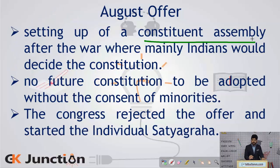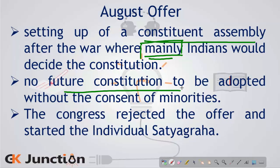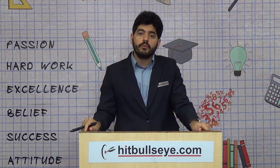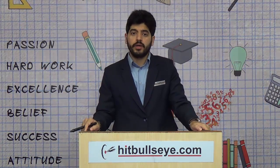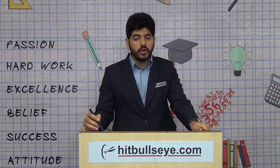The main proposals of the August Offer were: dominion status as the objective for India; expansion of the Viceroy's Executive Council; setting up of a constituent assembly after the war where mainly — and not solely — Indians would decide the Constitution; and no future Constitution to be adopted without the consent of the minorities. Congress rejected the August Offer mainly because it provided for dominion status and not Poorna Swaraj or complete independence.